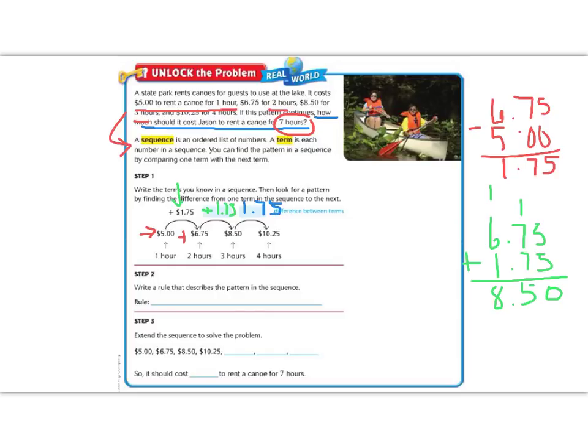In order to continue this pattern, we need to continue adding this rule. Our rule is that we add 1.75 for every hour. So we have term number 1, 2, 3, and 4. We need to find 5, 6, and 7 so that we can answer the question about how much it will cost to rent a canoe for 7 hours. So let's start with the last term we know. We know 10.25, and we're going to add 1.75 because that's our rule. So 5 plus 5 is 10, 7 plus 2 plus 1 is 10 as well. So 0, carry the 1, 0 plus 1 plus 1 is 2, and then we bring down the 1. So we get $12 even. So our next term is 12.00.